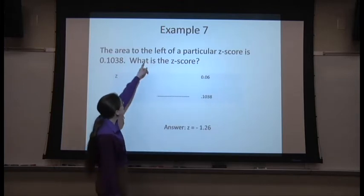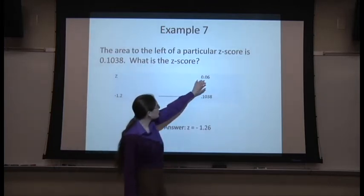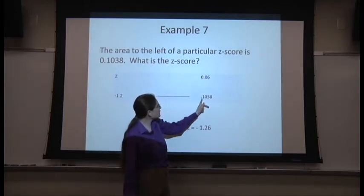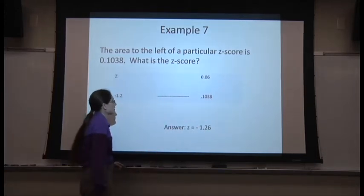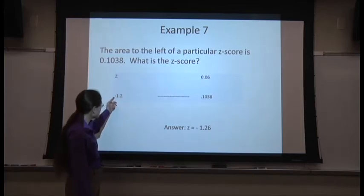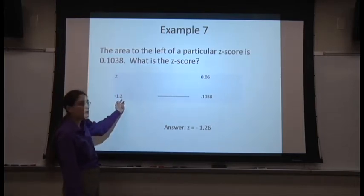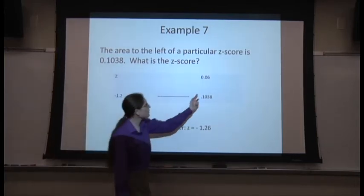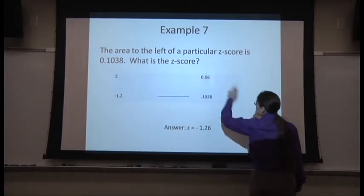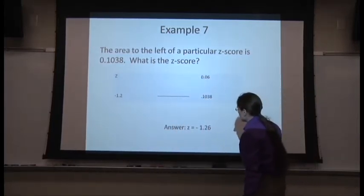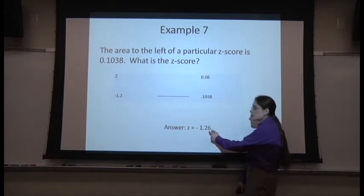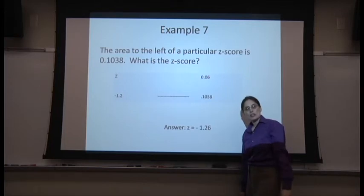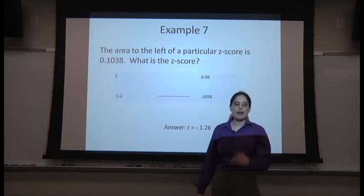So you want to dig through the body of the table, the middle of the table, until you find your number. And then see what row you're in, row negative 1.2. What column are you in? Column .06. Add them together, get negative 1.26. So that's how we use the z-table backwards.